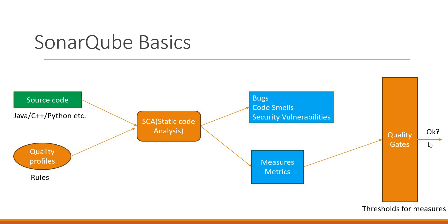SonarQube also has a feature called the quality gate. In the quality gate, we can set thresholds for each of the measures. For example, we can set that the number of code duplications should not exceed a certain amount. If during analysis a measure crosses this quality gate threshold, the code quality check will fail. If all measures do not cross their thresholds, all quality gates will be passed and we can move our code to the next stage of development — for example, deploying to a QA environment or production. If any measure crosses its threshold, the quality gates will fail and we cannot move our code to the next stage of the development lifecycle.